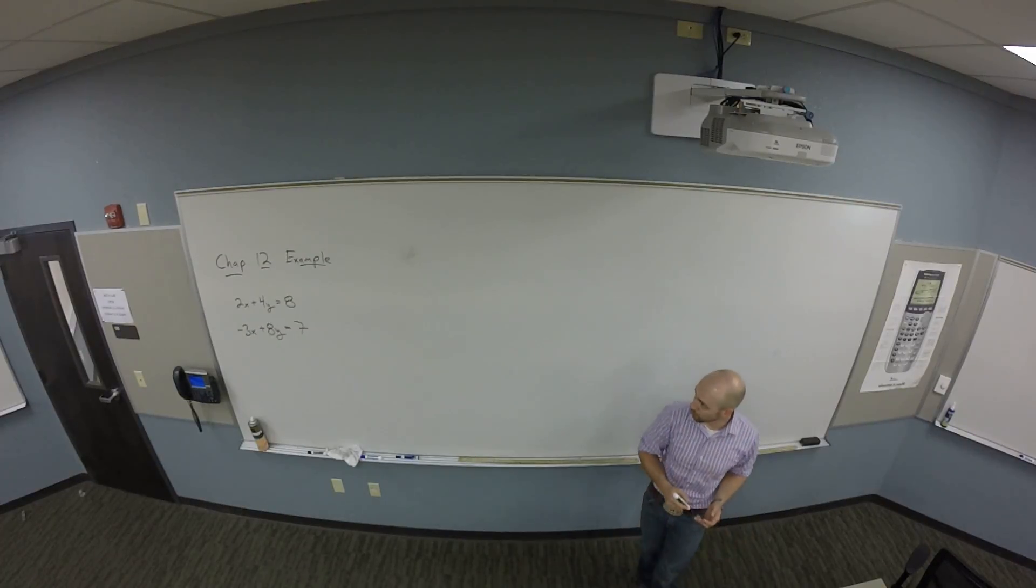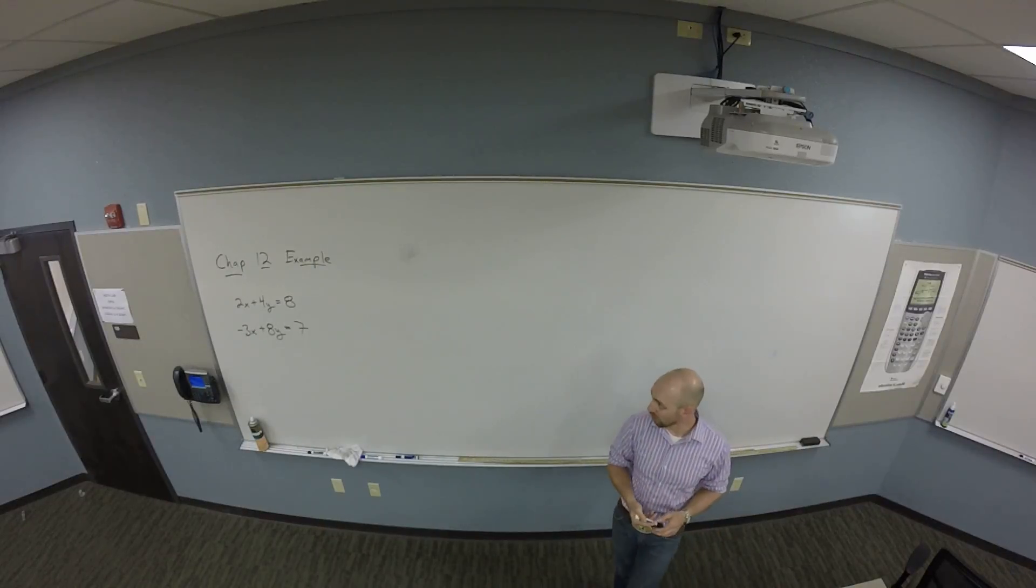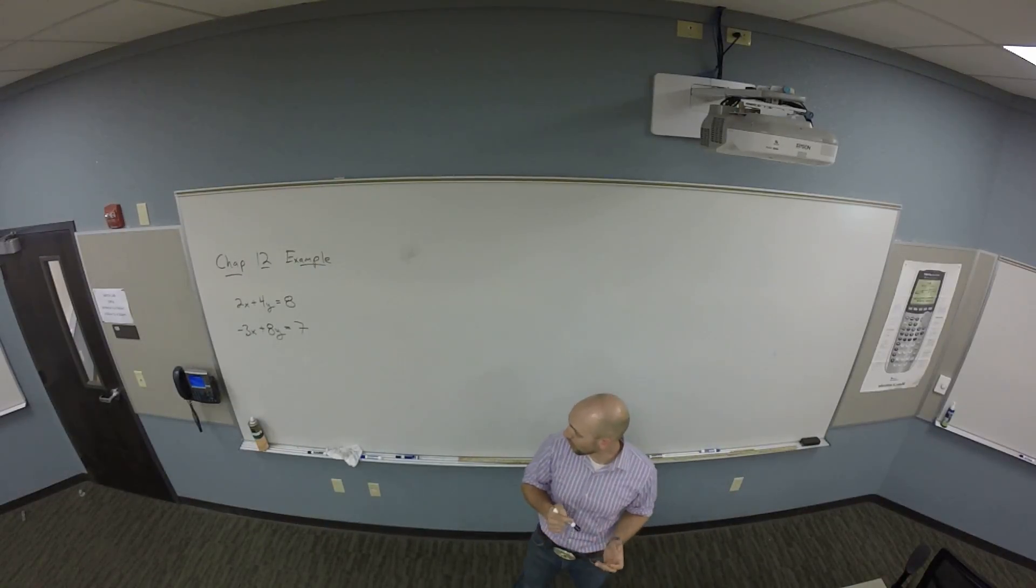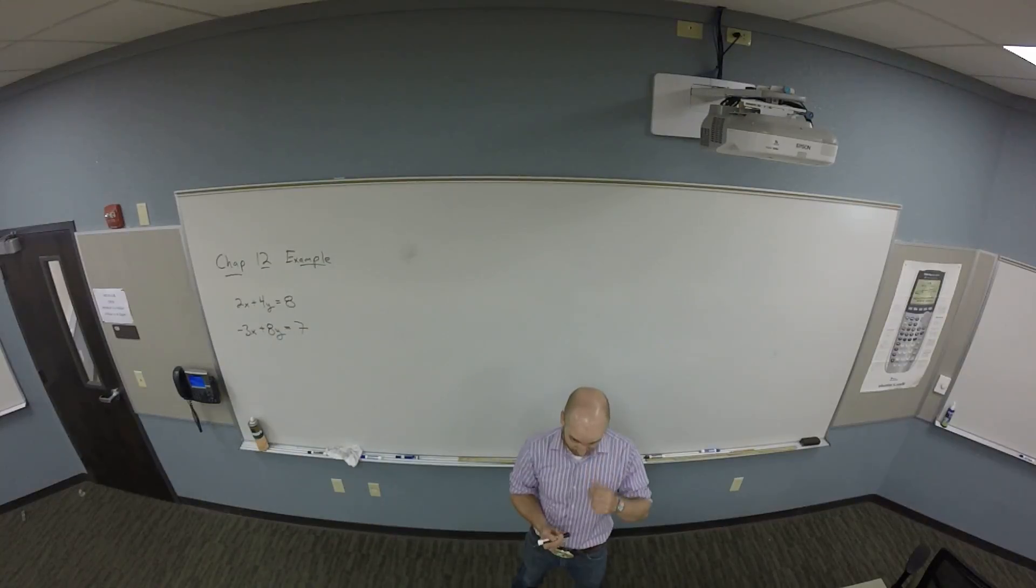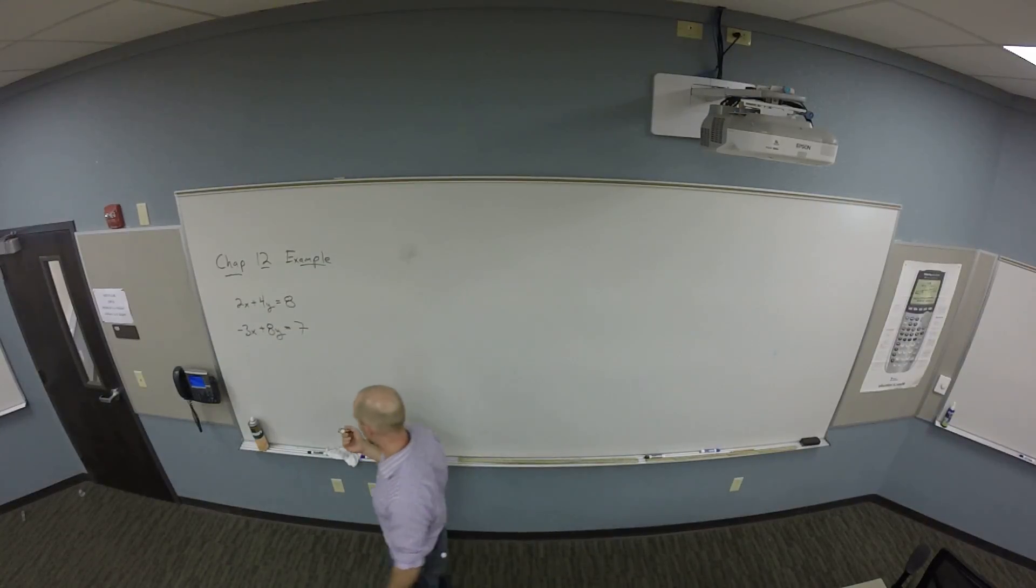All right, so let's try an example out of chapter 12. We want to turn it into a matrix and then solve: 2x plus 4y is 8 and minus 3x plus 8y is 7. So can you guys turn this into a matrix for me? It should be easy.